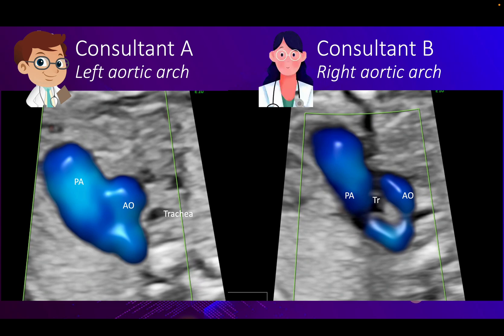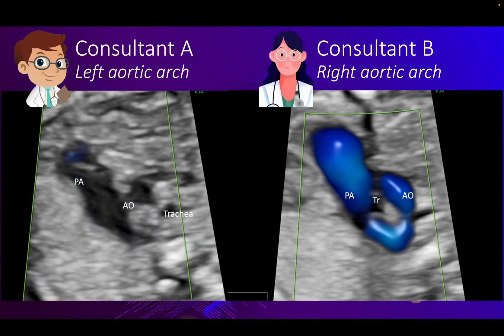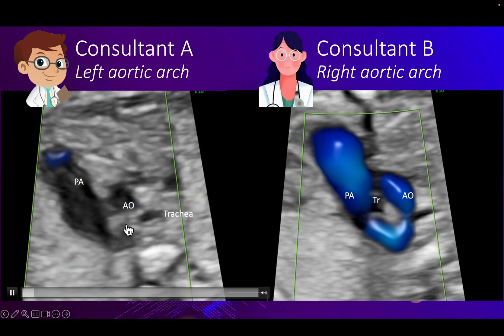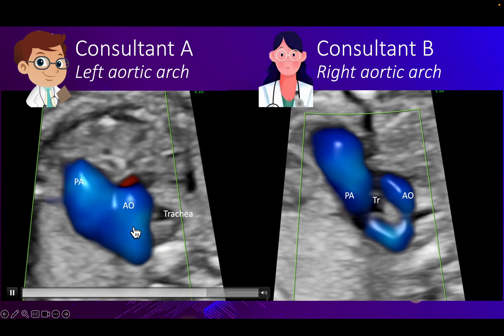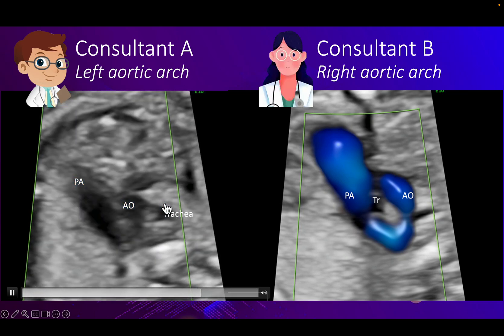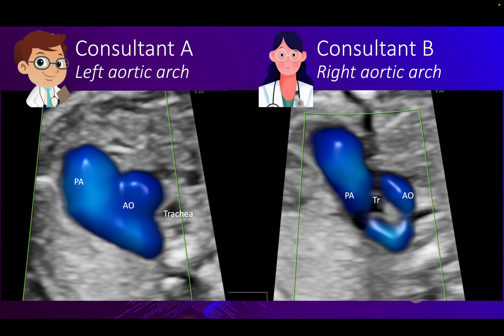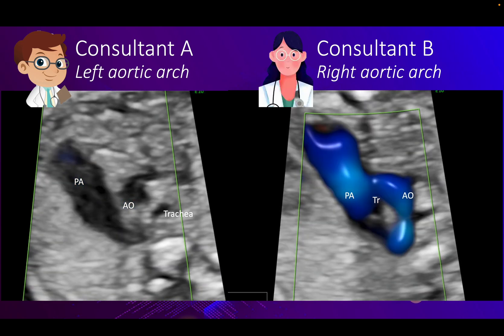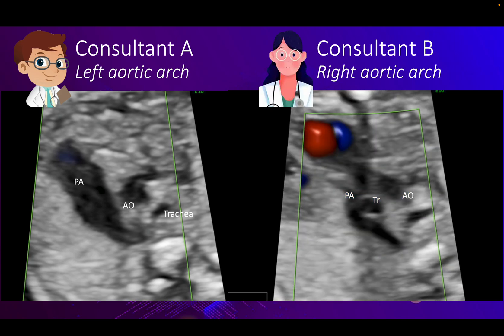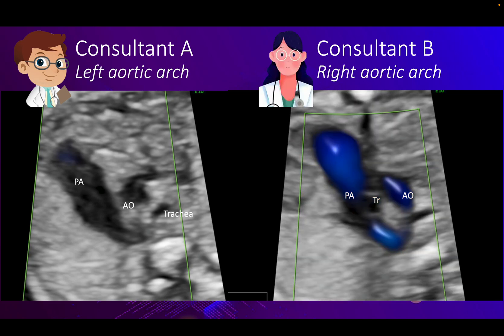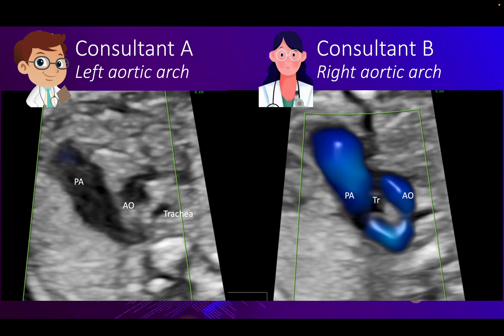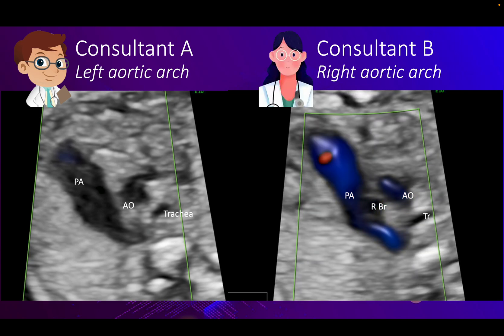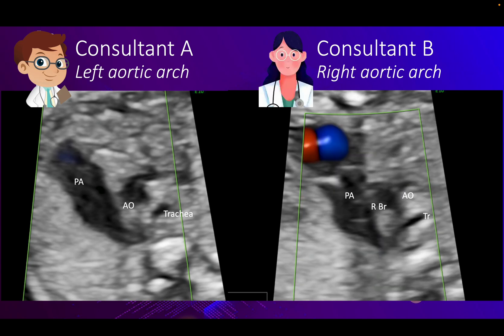I posted this video and question two or three days back. Consultant A said that the pulmonary artery and aorta form a V, and the trachea shows a normal three-vessel trachea view. But Consultant B reviewed the case and saw the trachea in the middle, the aorta on the right side, and the PA on the left, concluding this is a right-sided aortic arch. The answer is that Consultant B made a mistake, as many of you have already pointed out.